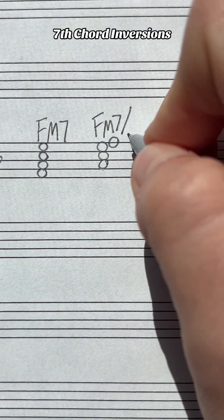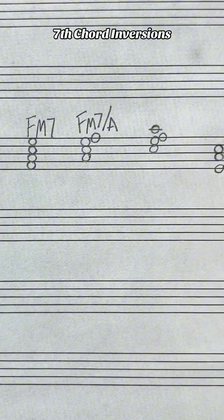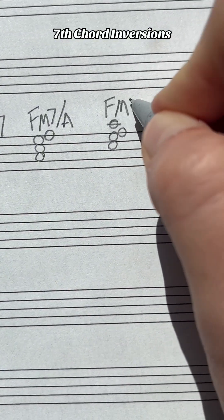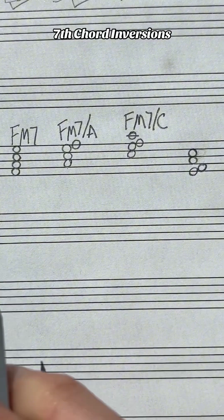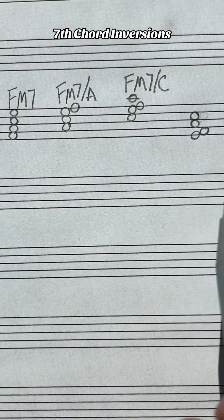F major 7 over A, first inversion. This is F major 7 over C. You'll notice they all have the same notes, just in different order.